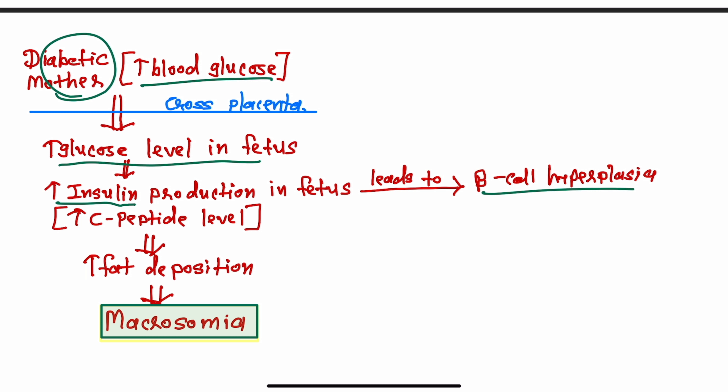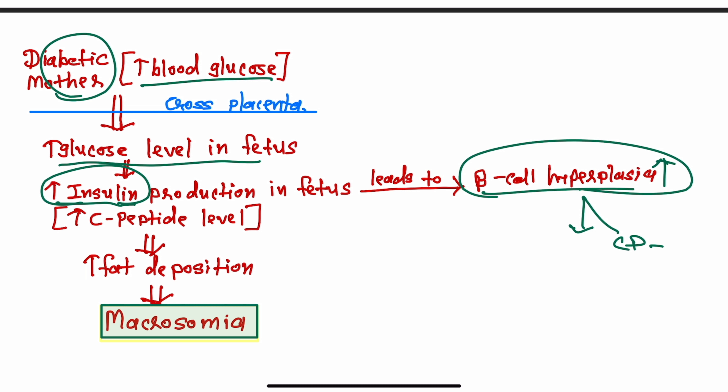Because hyperglycemic blood continuously comes from the mother into the fetus, the fetus needs to keep increasing insulin production to compensate. This leads to beta cell hyperplasia in the fetal pancreas. As we know, when insulin is released from the pancreas, C-peptide is also released along with it. So when the insulin level increases, the lab will find an increased C-peptide level.